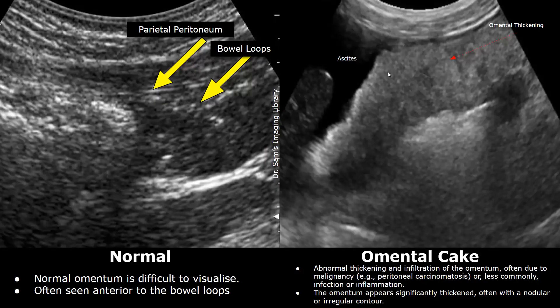Ovarian cancers and gastric cancers can infiltrate the omentum and lead to this type of appearance on ultrasound. It is less commonly associated with infections. In many cases, ascites may also be present.